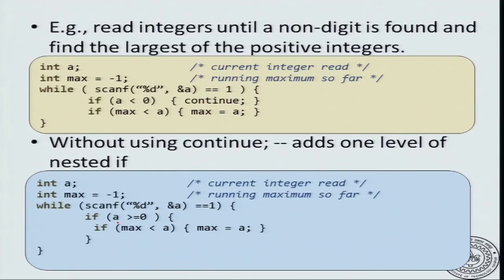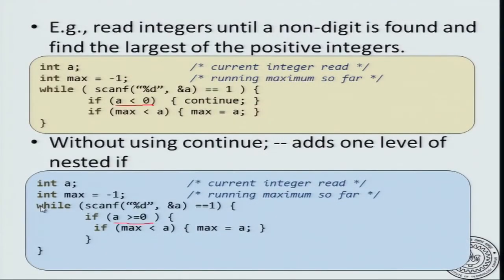This says that if a is non-negative, then execute the next statement. Here it says that if a is negative, then continue which means skip the next statement. Notice that these two conditions are the negations of each other. The long and short of it is that continue is not really necessary, but if you have it, then it is useful and it makes the code clearer in certain occasions.